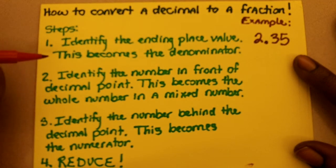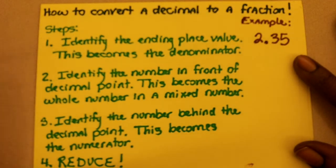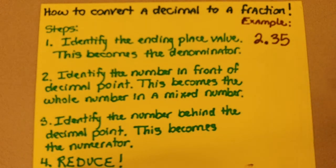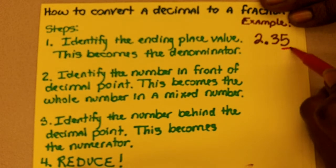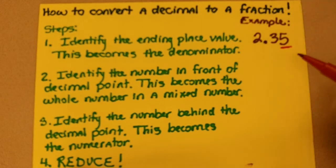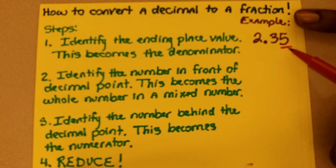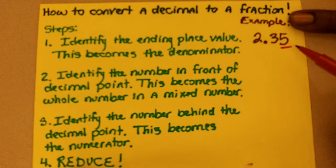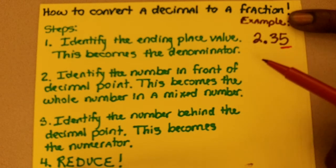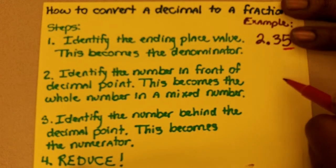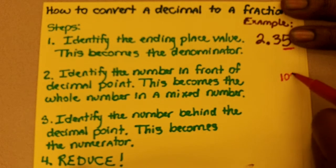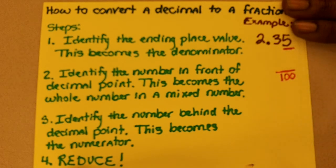First, you're going to identify the ending place value in your decimal. In this case, the decimal ends in the hundredths place. This hundredths is going to become the denominator in my fraction. So since it ends in the hundredths, one hundred is my denominator.